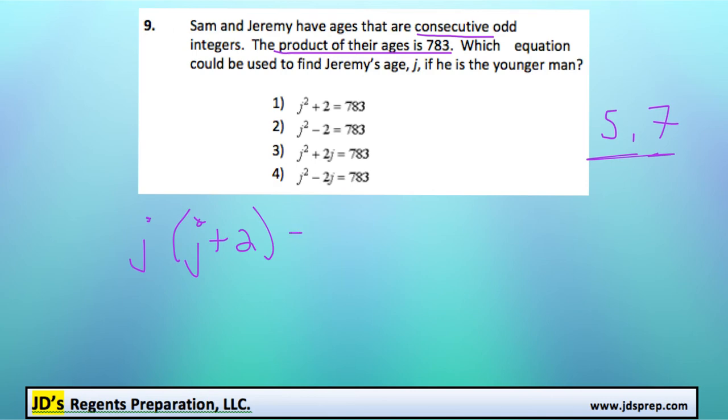So if we multiply these together, we get a product of 783. And we can see from the list of options that what they've done is they've expanded this here and multiplied this together. So you'd get j squared plus 2j equals 783. And that looks like option number 3.